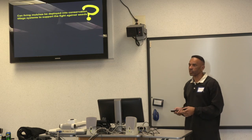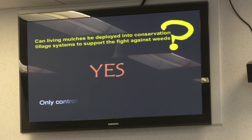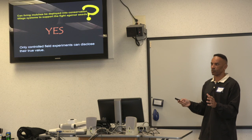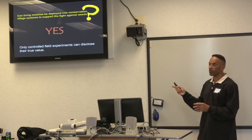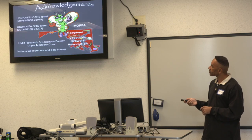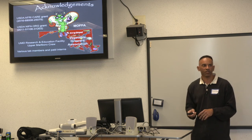Returning to the original question: can living mulch be deployed in conservation tillage systems to support the fight against weeds? I believe yes — but they're tricky. We need to figure out the competition issue. But I wouldn't tell anyone to go plant vegetables into a living mulch expecting good weed control until we've done more testing. With that, I'd like to acknowledge the funding agencies and take any questions.